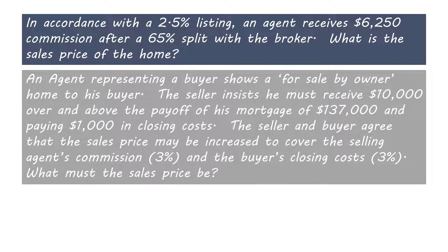The second question is: an agent representing a buyer shows a for-sale-by-owner home to his buyer. The seller insists he must receive $10,000 over and above the payoff of his mortgage of $137,000, and paying $1,000 in seller's closing costs. The seller and the buyer agree that the sales price may be increased to cover the selling agent's commission of 3% and the buyer's closing cost of 3%. What must the sales price be?